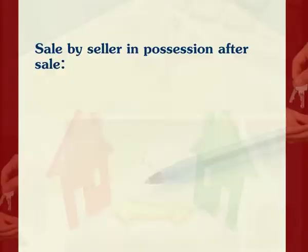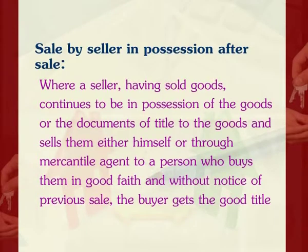Exception 5: Sale by a seller in possession after sale. Where a seller, having sold goods, continues to be in possession of the goods or documents of title and sells them either himself or through a mercantile agent to a person who buys them in good faith and without notice of the previous sale, the buyer gets a good title. For example, Raman sells certain goods to Aakash and promises to deliver the next day. Before delivery, Raman sells and delivers the goods to Sagar, who buys them in good faith without notice of the prior sale. Sagar gets a good title, and Aakash's remedy is against Raman, not Sagar.